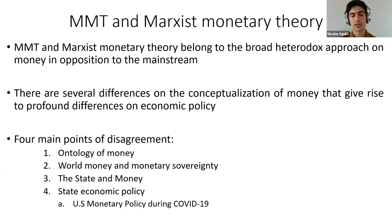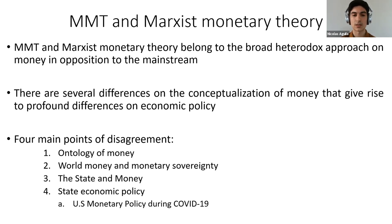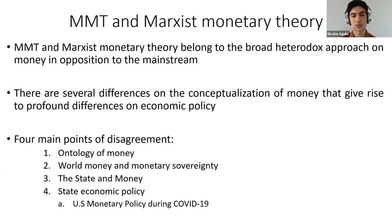We focus particularly on the ontology of money — what money is for each tradition — because there is an overemphasis in many cases on economic policy, both by mainstream and heterodox critics of MMT. We think that MMT's policy conclusions are a coherent result of their understanding of money. Tackling policy without discussing the underlying notion of money is somewhat superficial. So instead we focus on the ontology of money, then extend that to how we understand world money and monetary sovereignty, the role of the state, and finally economic policy — in particular US monetary and fiscal policy during the last year.